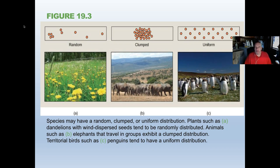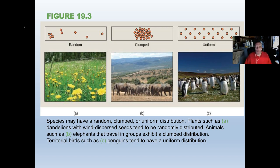Far and away the most common type of distribution is clumped distribution. Living things tend to be clumped because the resources they need for survival are themselves clumped — not randomly or uniformly spread. If all the food is in one area, that's where the animals will be. In a dry habitat like where elephants live, wherever the water holes are is where animals will be clumped, because they need access to water every day.